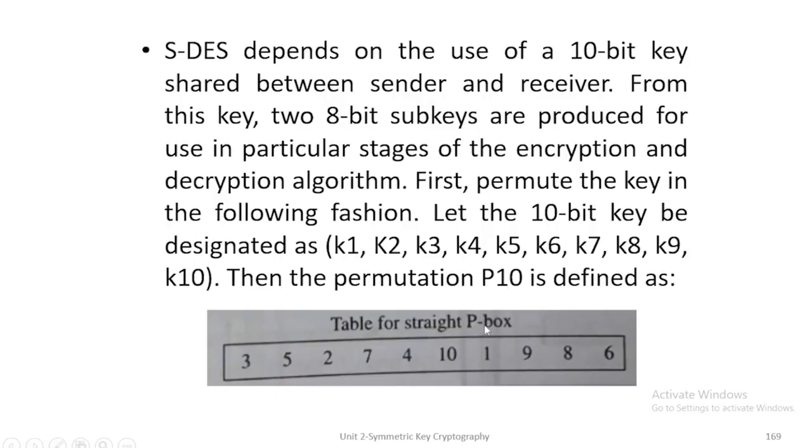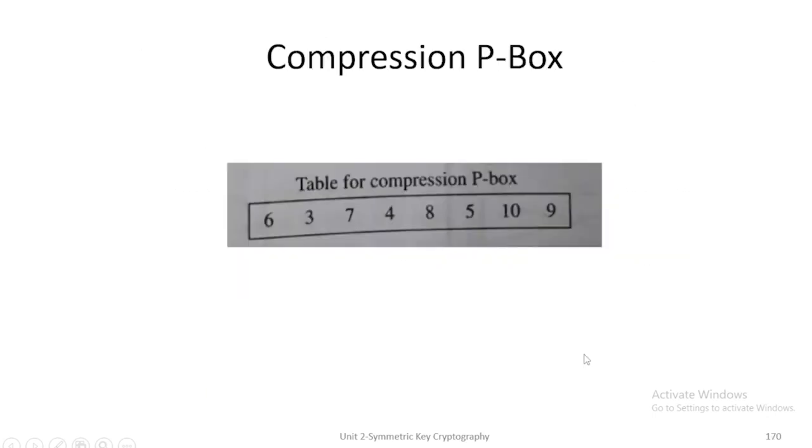Now how the permutation is done. This is the input. The continuous 10-bit key will be numbered as 1, 2, 3, 4 like that. But after straight P-box key means permutation. This is the third bit key value. Fifth bit value will be taken as second bit. Then second bit value will be taken as third bit. In this way, we should arrange it. This is also 10-bit value.